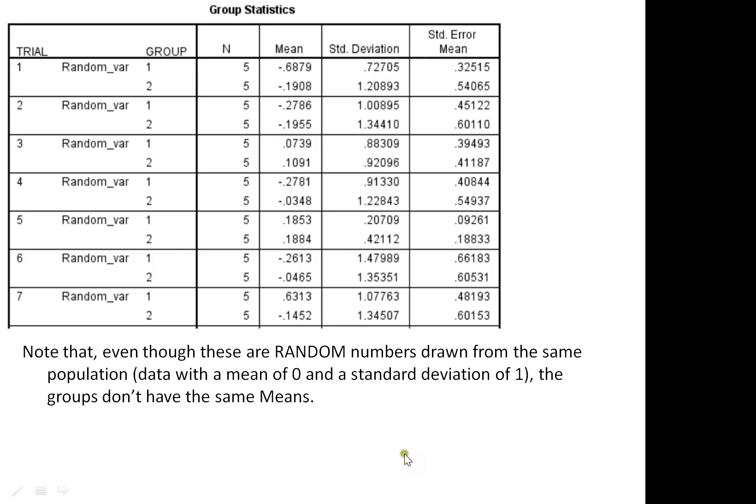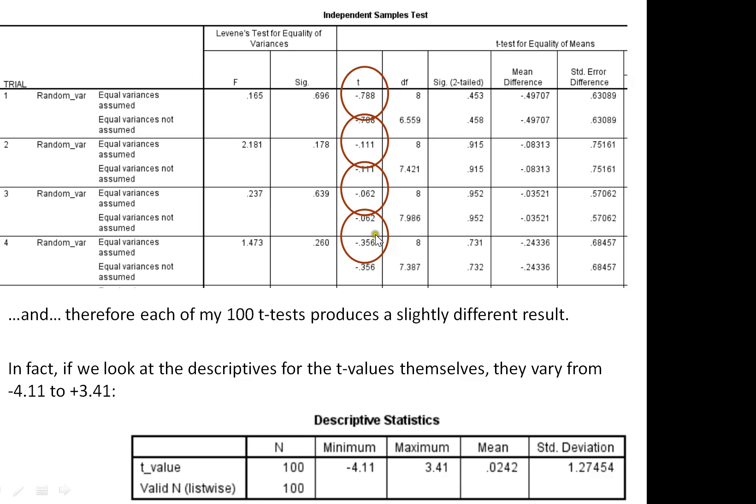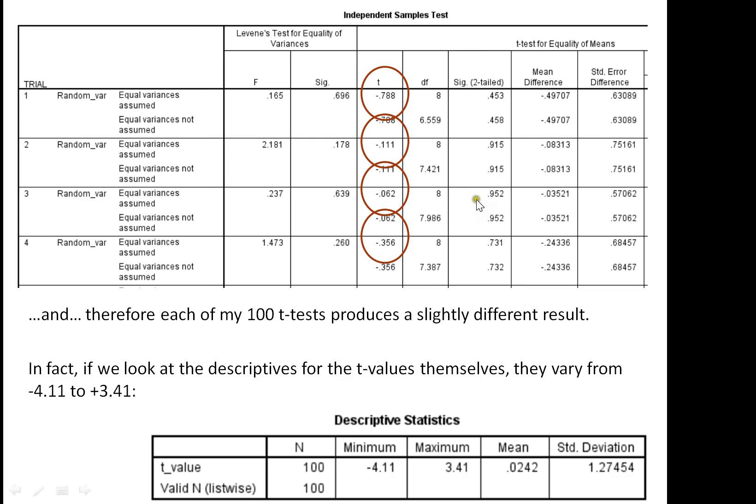The first bit of output we get is the group statistics. Remember, because I've asked it to split by trial, I'm going to get a hundred examples of group one versus group two, mean, standard deviation, so on and so forth. So for my first trial, the means of the two groups are different by about 0.4, but only by less than 0.10 for my second group, and the difference for trial three is even less. Note that even though these are random numbers drawn from the same population, which is data with a mean of zero and a standard deviation of one, the groups don't have the same means. In fact, the t-values we get out the other end are also quite different. So, for example, the t-value for that first pair of five pieces of data is minus 0.78, minus 0.11 for the second trial, minus 0.06 for the third. Now, remember that trial three was the one which had a very, very small difference between the means, and in fact the probability of getting that difference between the means due to a chance alone is about 0.95, 95% of the time.